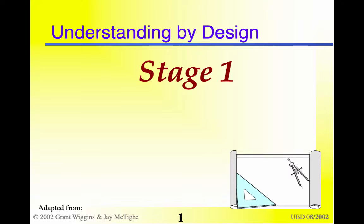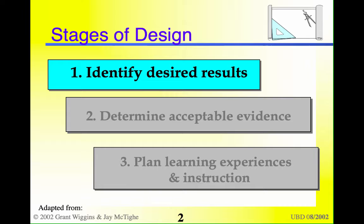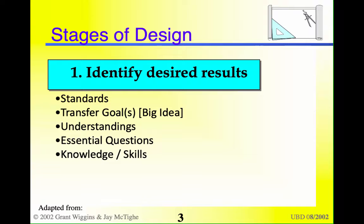We're going to continue to look at the Understanding by Design format and today we should complete Stage One, which has to do with all of the standards and the outcomes to set up this unit. Remember there are three stages and Stage One is to identify the desired results. What's in this stage? The identification of the standards, the identification of the big idea and the transfer goals that emerge from that big idea for life, the enduring understandings that we want students to carry away with them, and the essential questions that can help students think in higher-level and deep, enduring ways about the content of this unit.